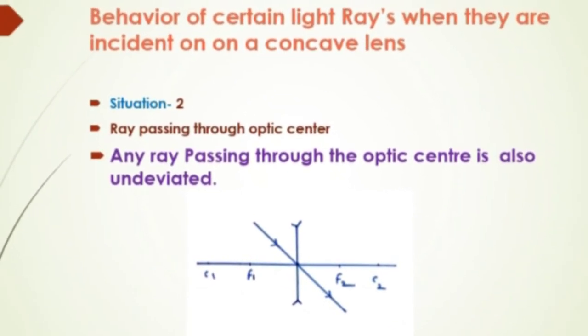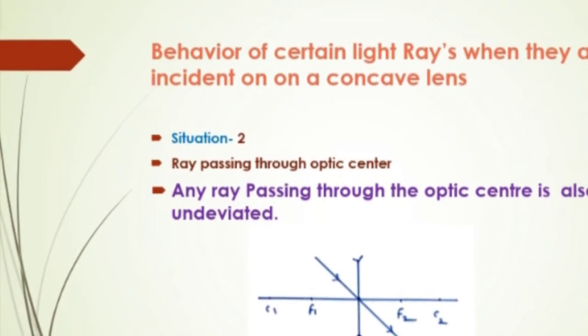Rule 2: Any ray passing through the optic center is also undeviated after refraction.